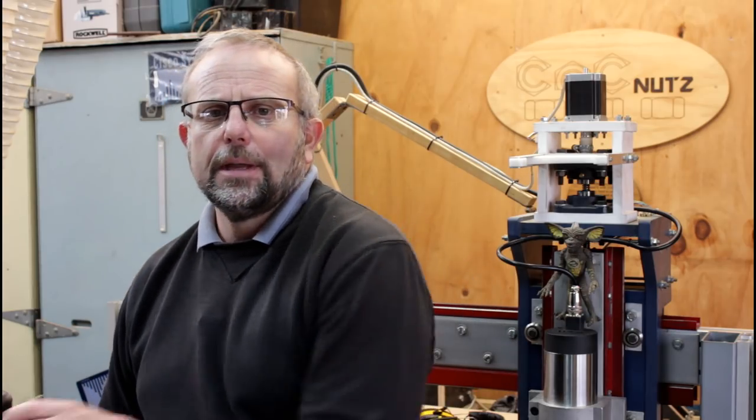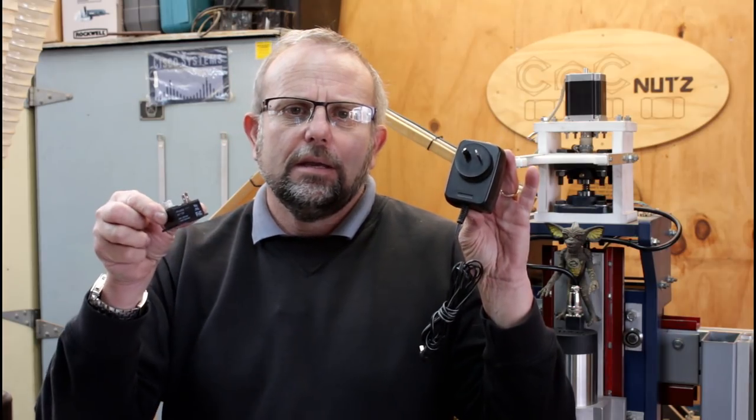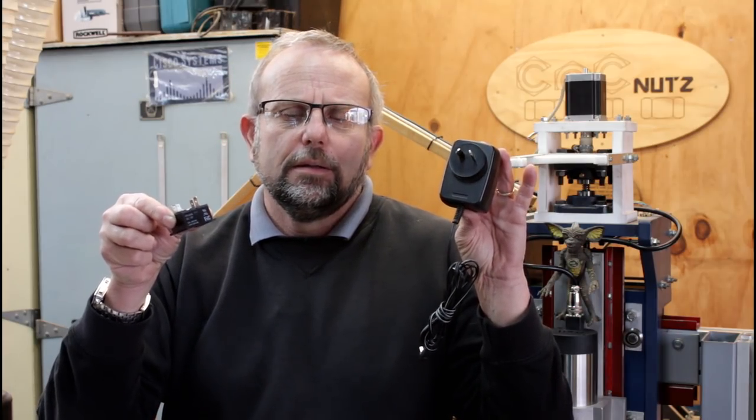But today we're going to go a little bit further. I'm going to add to it a 12 volt power supply and a small 12 volt relay. We'll be using that to start and stop the spindle under control of Mach 3 or UC CNC.